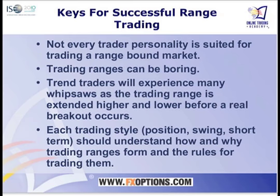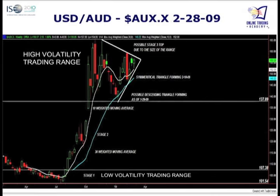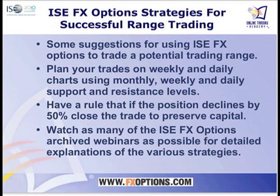Select currencies that have support areas for bottoms and resistance areas for tops. Understand that you are trading most of the time what we call the intermediate-term trend if you are trading trading ranges, which is going to be counter to the primary trend. So be sure you take your profits on your longs in a downtrend quicker, or your shorts in an uptrend quicker. Know your volatility — big ranges and small ranges trade very differently. Steve's going to have a great session on volatility coming up.